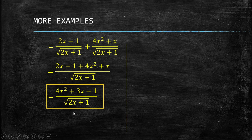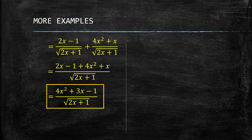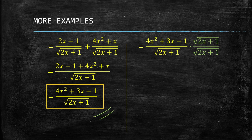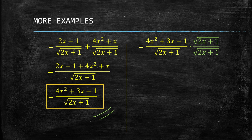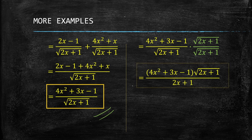If you don't want a radical sign in the denominator, you can rationalize it — though removing radicals from the denominator is not a strict rule, just a common practice. Either form can be the final answer. If you do want to remove the radical, multiply the expression by square root of (2x+1) over square root of (2x+1) to cancel out the radical in the denominator. Both answers are acceptable.